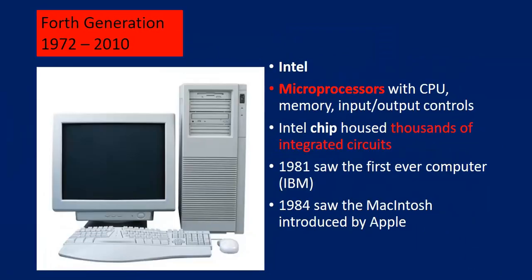The fourth generation spans 1972 to 2010. Microprocessors became popular during that time, and the Intel chip housed thousands of integrated circuits. In 1981, IBM showed its first personal computer, and in 1984, the Macintosh was introduced by Apple. In the fifth generation, from 2010 onwards, the biggest developments are artificial intelligence, parallel processing, and superconductors.